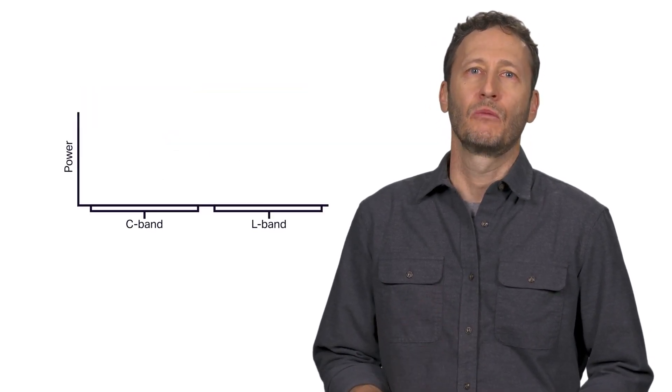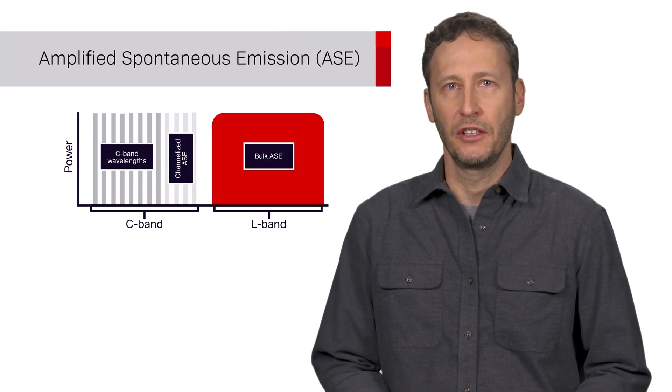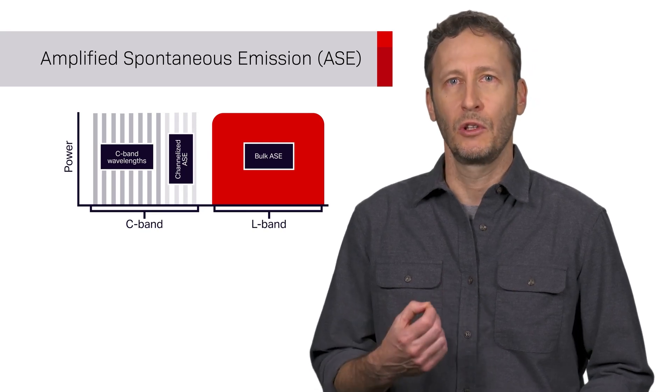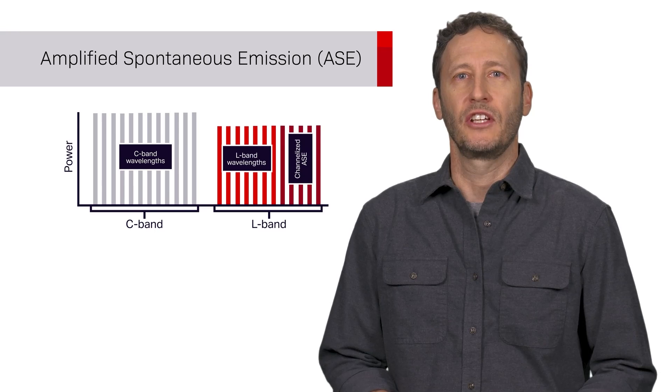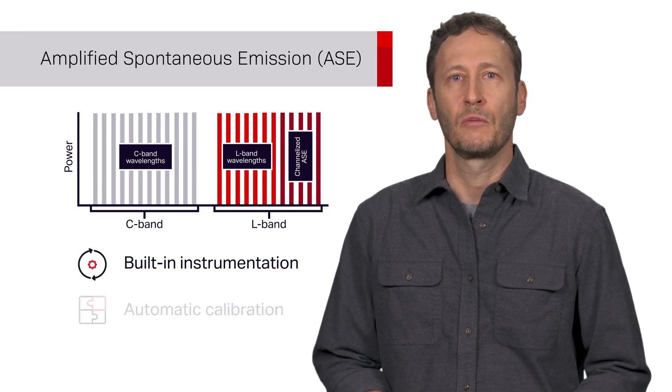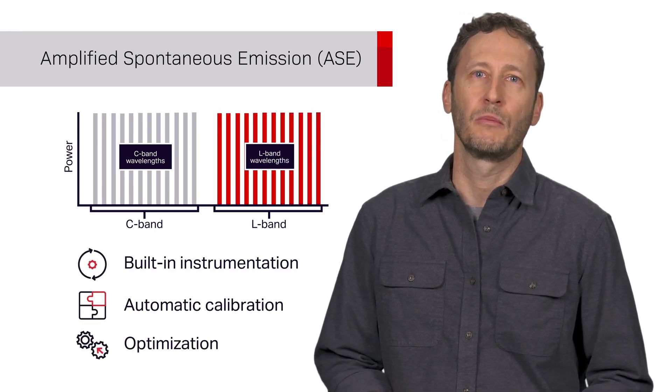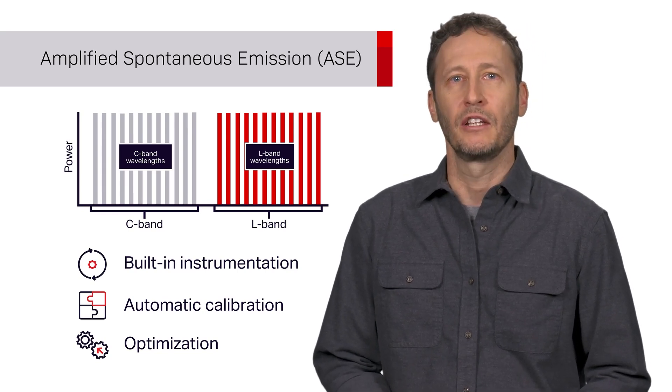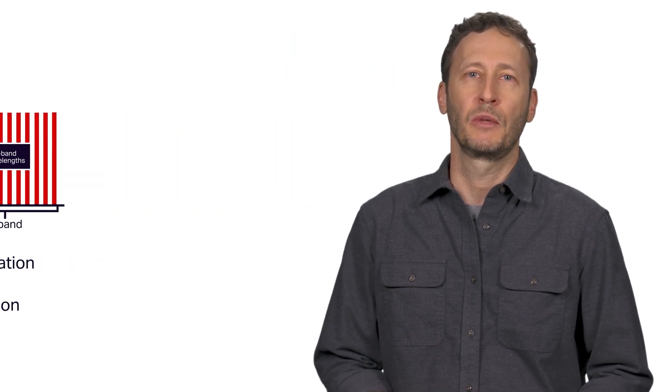Adding wavelengths to the L band can be done without any apprehension because we use channelized amplified spontaneous emission or ASE as pseudo channels in the system, thus maintaining a stable loading throughout its operating life regardless of channel count. Sienna's built-in instrumentation, automatic calibration and optimization ensure that you always get the best possible performance on a span by span basis. That way you won't need to re-optimize or re-engineer anything when you begin to add channels in the L band.